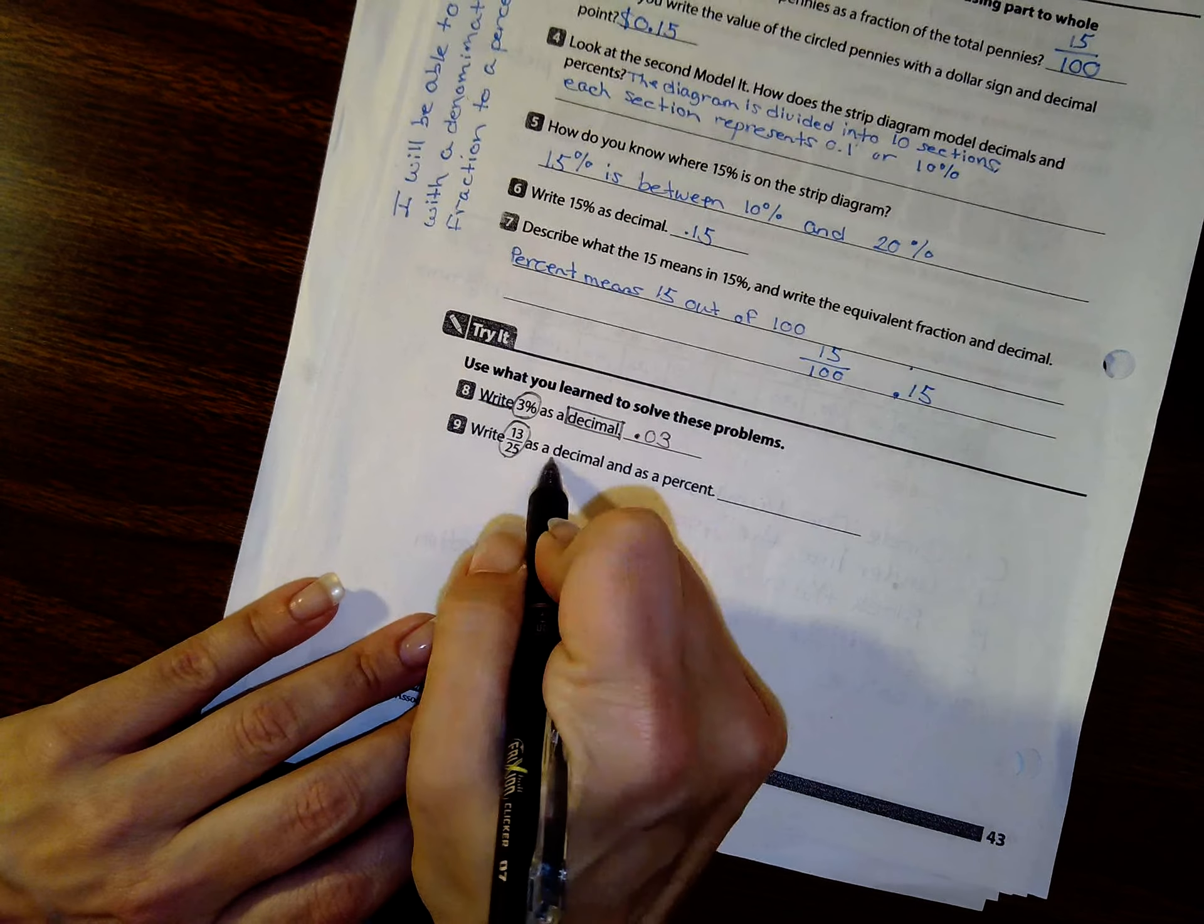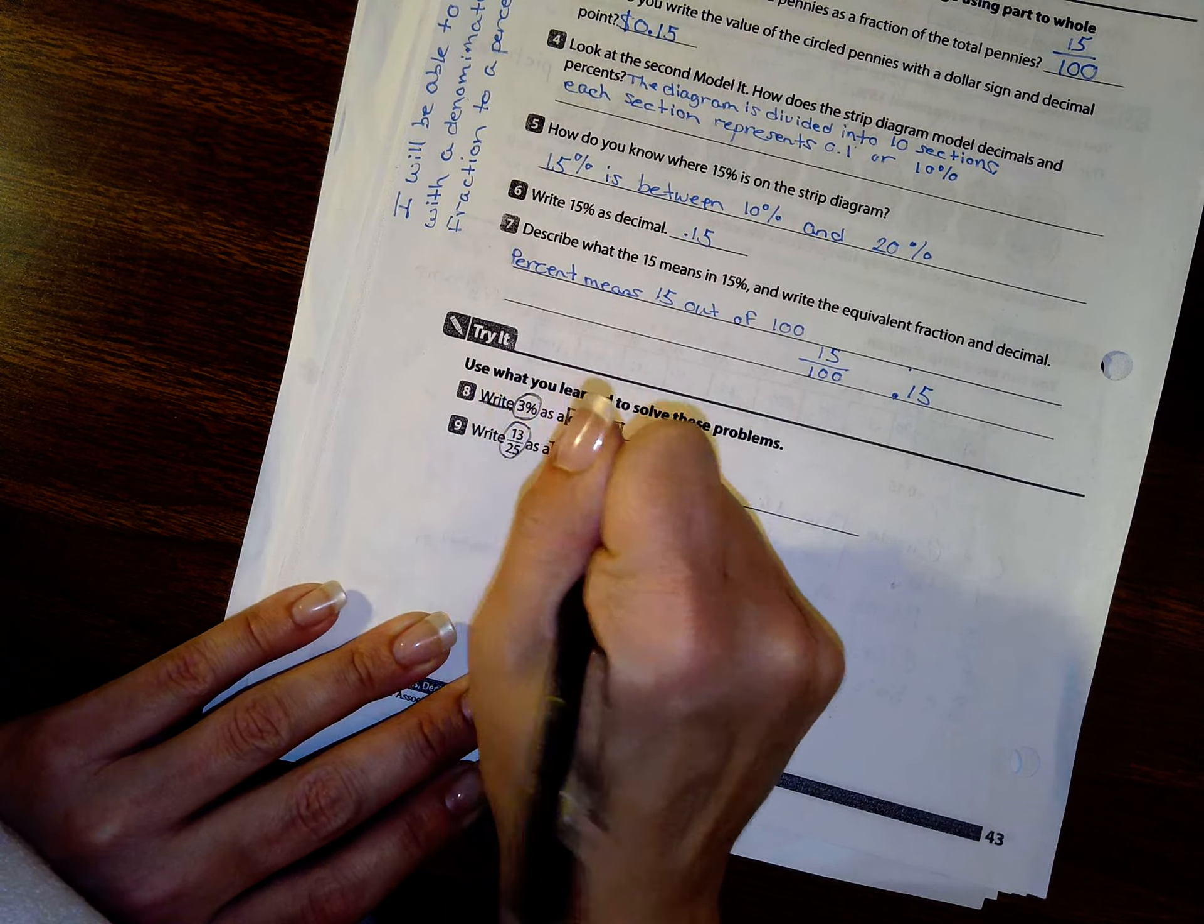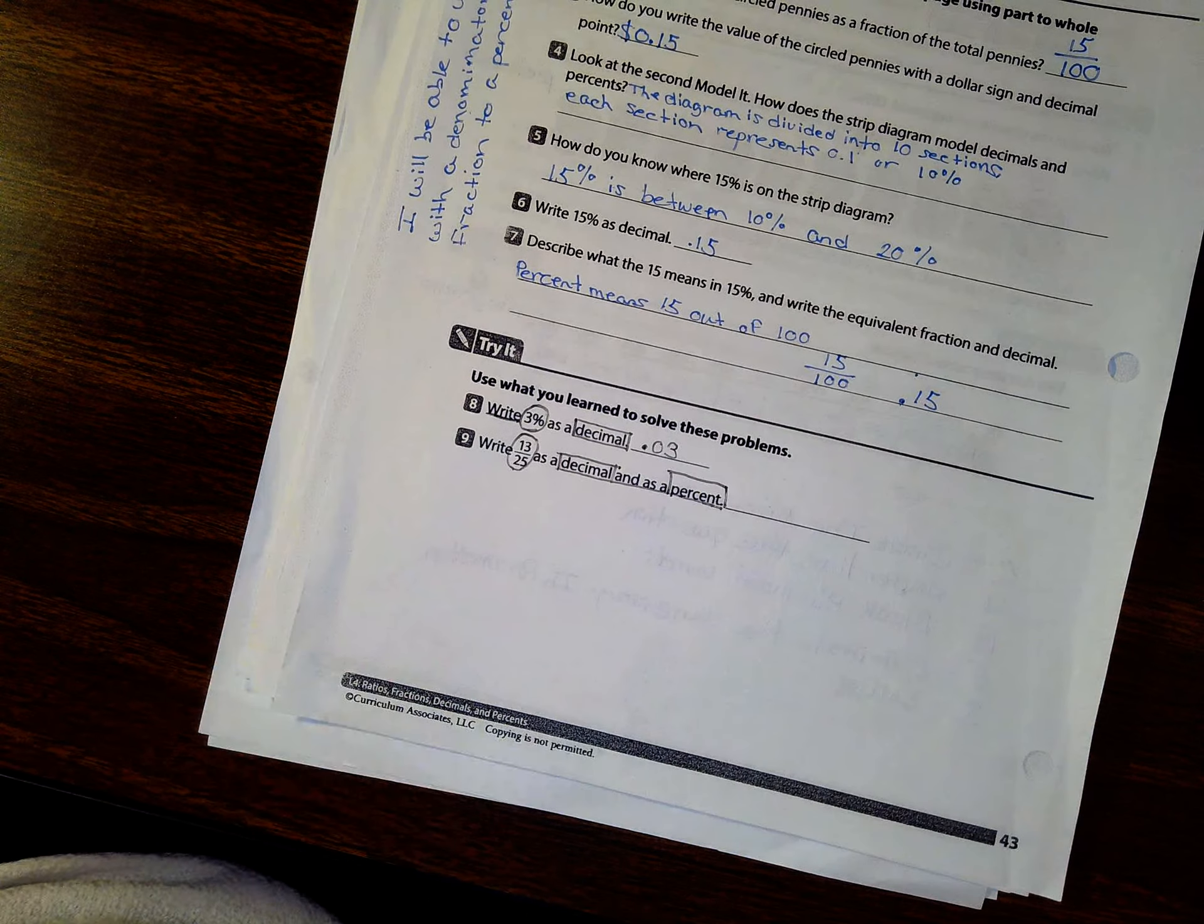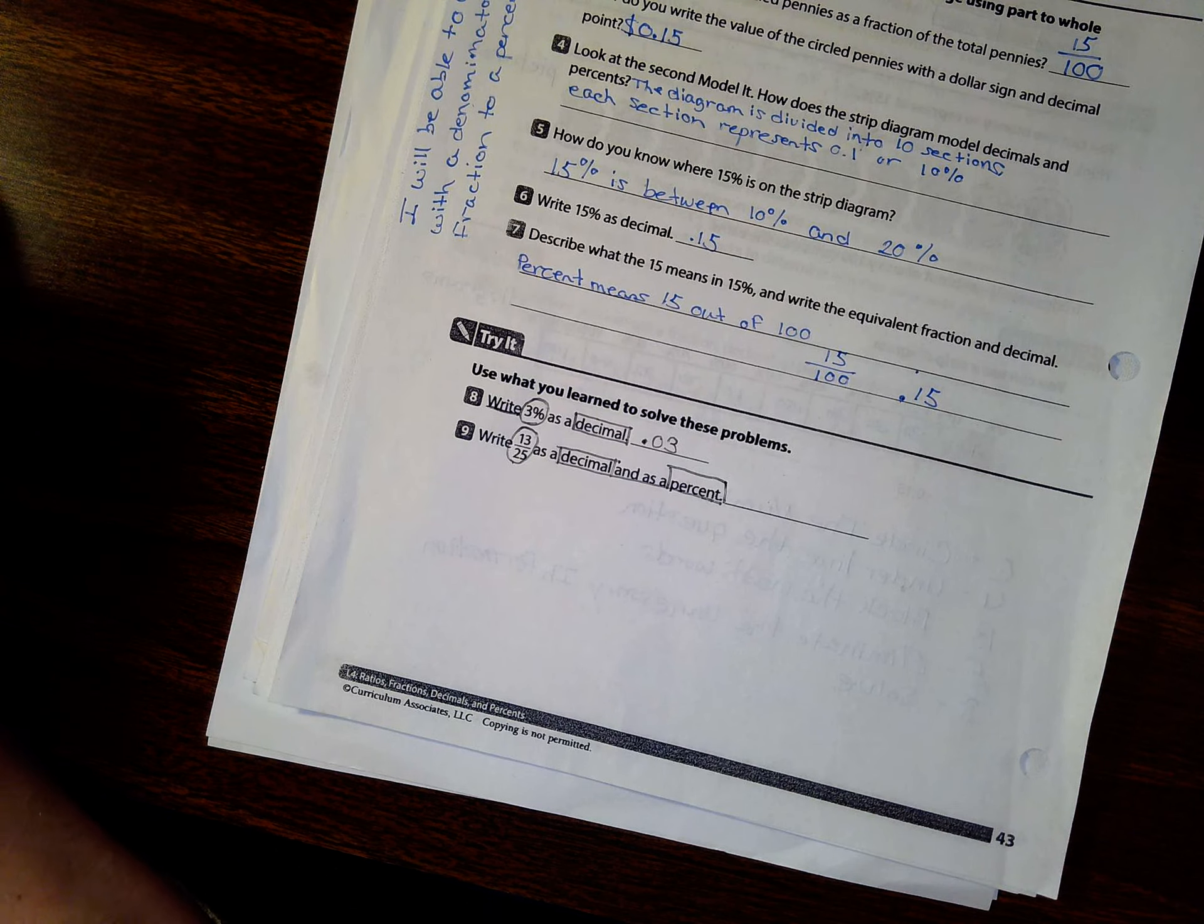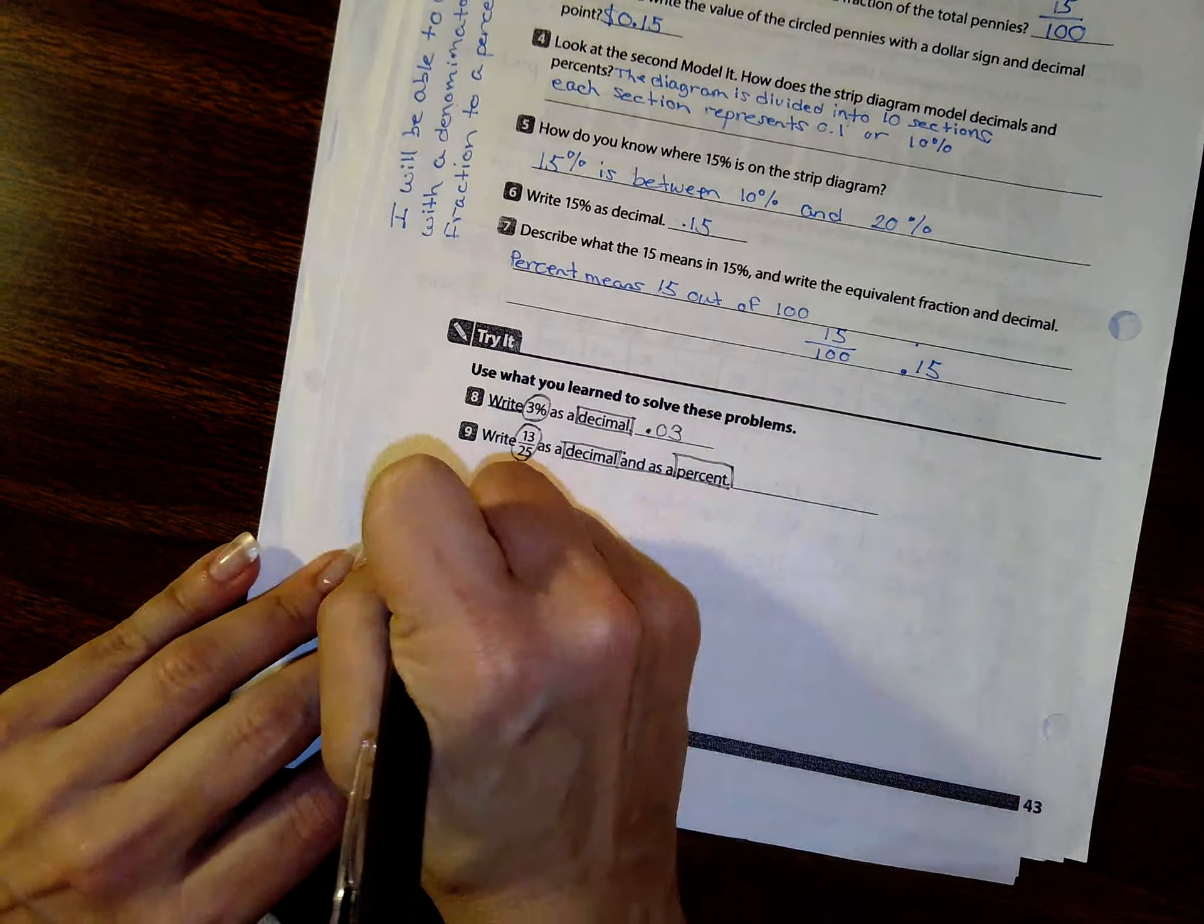So we're going to write this as a decimal and as a percent. The first thing I need to do is now get my RIPs page. And I cannot seem to find it, so I'm going to do it here.